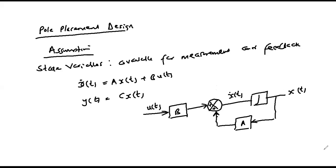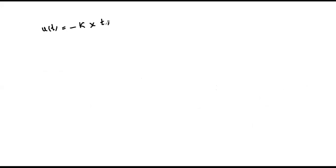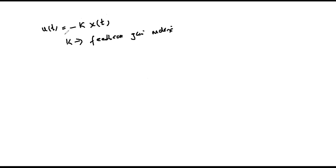We introduce a controller and the control law is defined by u(t) = -Kx(t), where K is a feedback gain matrix. So we measure the states and feed them back through feedback gain matrix K as a negative feedback system.